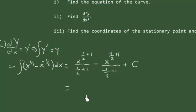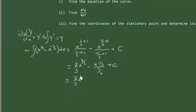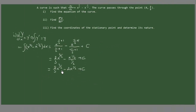This gives us x to the power of 2.5 over 2.5, and for the second term x to the power of minus 0.5 over minus 0.5, plus C. Simplifying, this equals (2/3)x to the power of 3.5 minus 2x to the power of 1.5 plus C. Of course, anytime you integrate, it has a constant of integration. And this here is y.